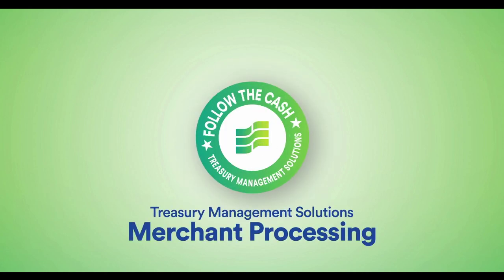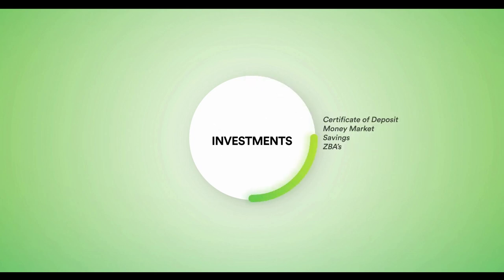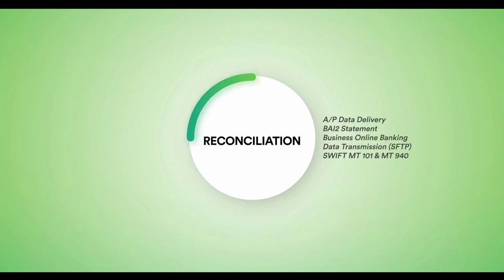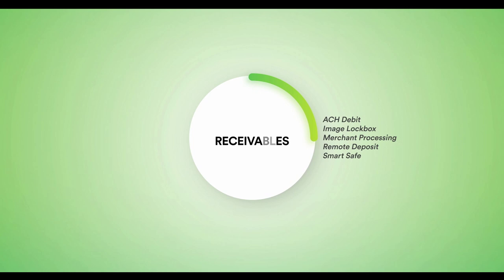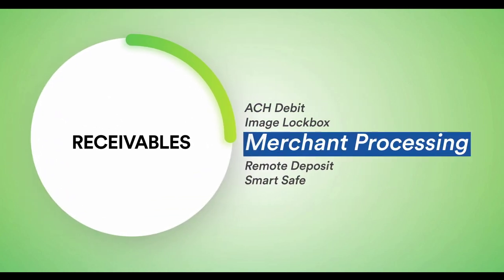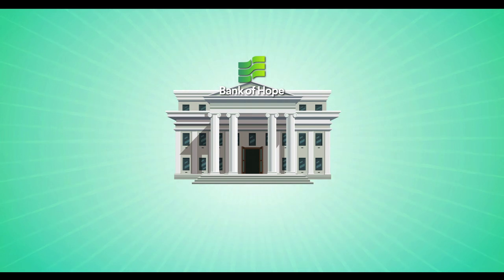Welcome to the Merchant Processing video presentation. Let's take a quick look at the cash flow cycle before we start. Here we can see the four categories that make up a business cash flow cycle: Receivables, Investments, Disbursements, and Reconciliation. Today we will talk about Merchant Processing, a key receivable solution that makes your card and electronic payments process faster, easier, and safer.